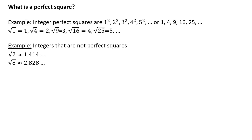Before we learn to complete the square, we need to properly understand what a perfect square is. I want to start out talking about integer perfect squares: 1 squared, 2 squared, 3 squared, 4 squared, 5 squared — or 1, 4, 9, 16, 25, etc.